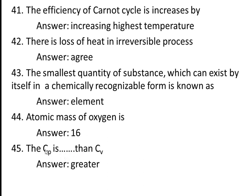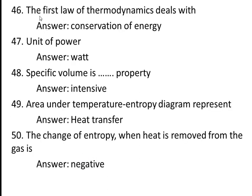Forty-fifth question: cp is always greater than cv. cp is specific heat at constant pressure and cv is specific heat at constant volume. Specific heat at constant pressure is the amount of heat required to raise the temperature of gas by one degree at constant pressure — to maintain constant pressure, the heat supplied must also do some external work. That is not the case for constant volume, so the amount of heat required for cp is always greater than cv.